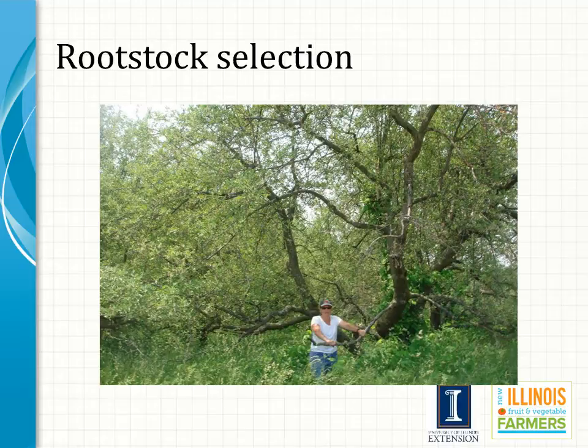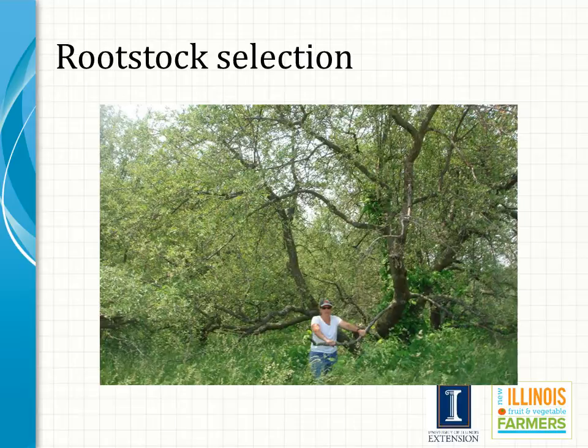Rootstocks for apple trees are special apple varieties that control the height of the tree and give it other special characteristics, such as resistance to insects or diseases, solid anchorage in the ground, and early fruit production. A cultivar is grafted onto this special rootstock, so you are essentially buying two plants — the rootstock that anchors the tree and the cultivar that produces the fruit. Peach rootstocks, on the other hand, have been selected more for their tolerance to stresses than for size control. Some of the stresses may include root-knot nematode, calcareous soils, water logging, soil hardiness, and peach tree short life.